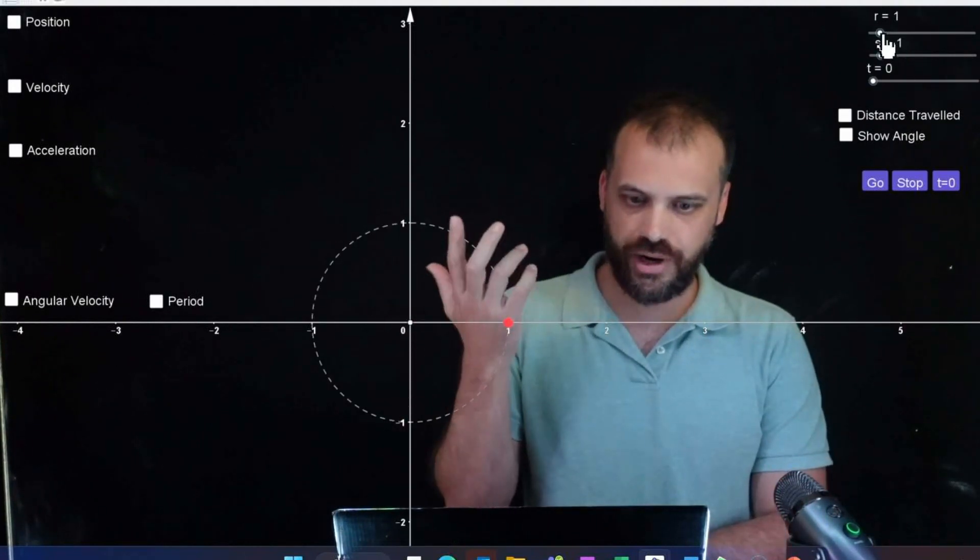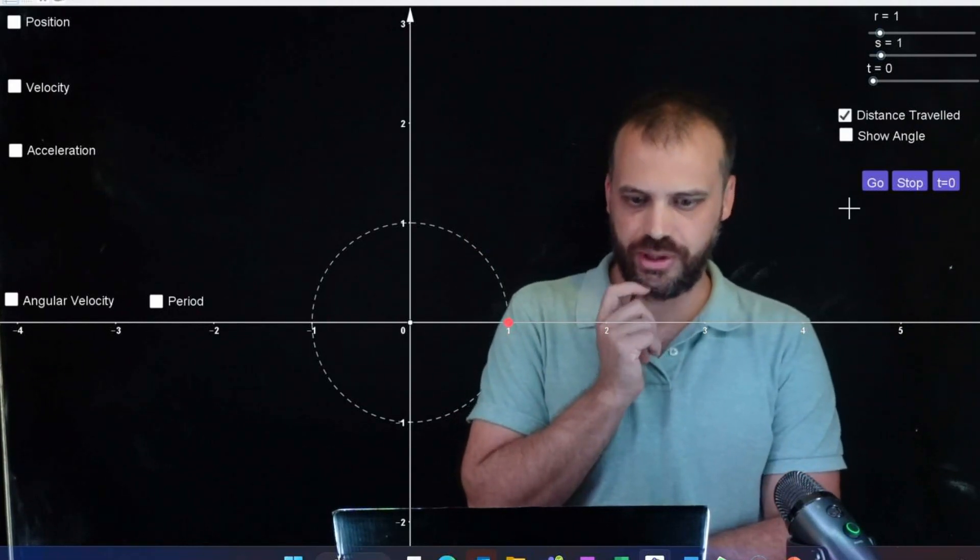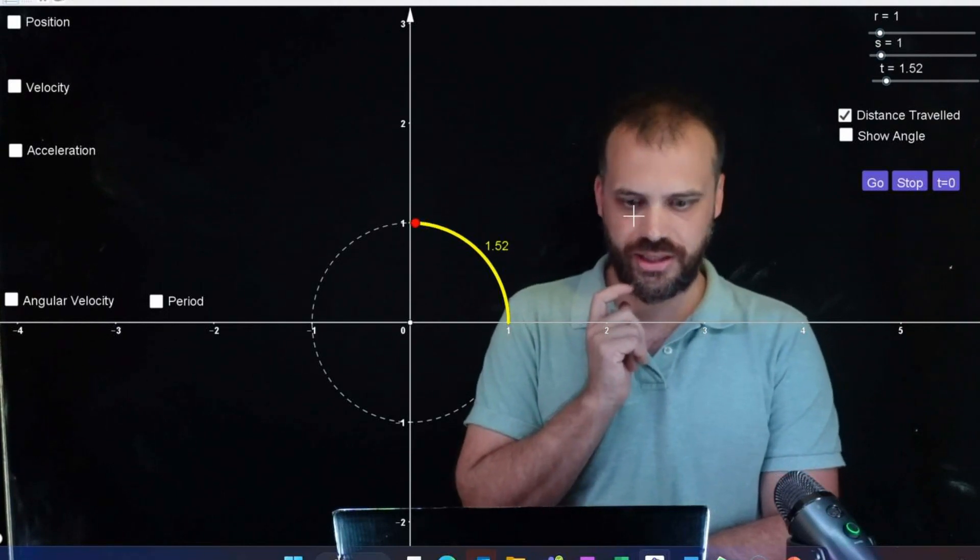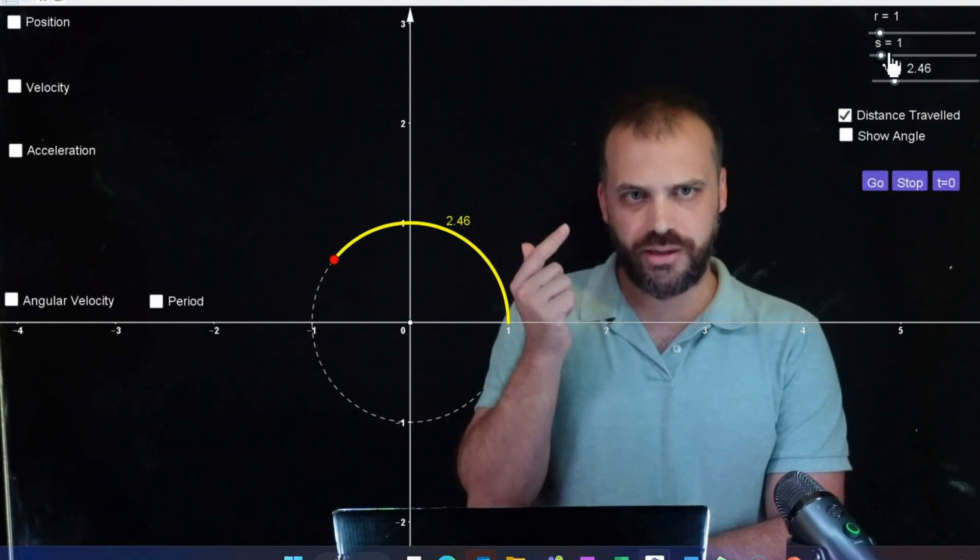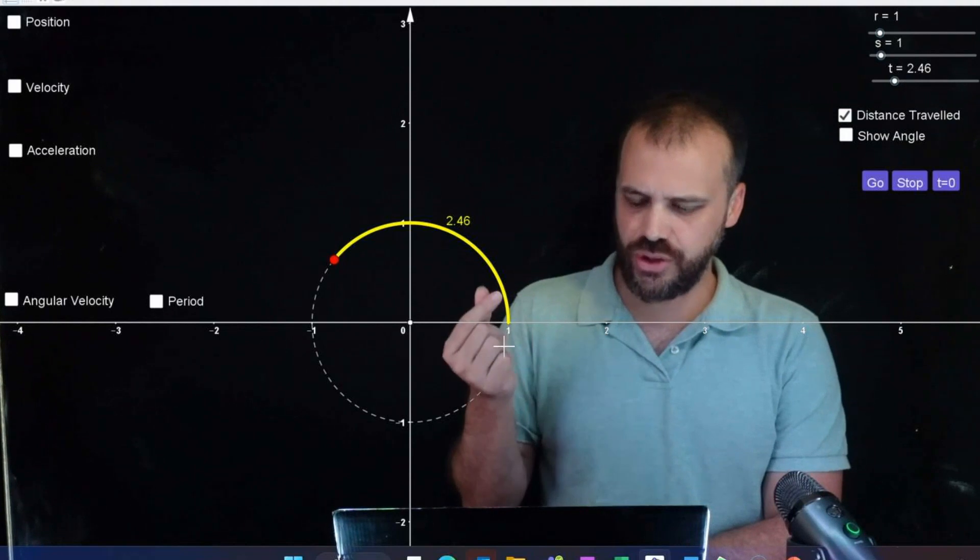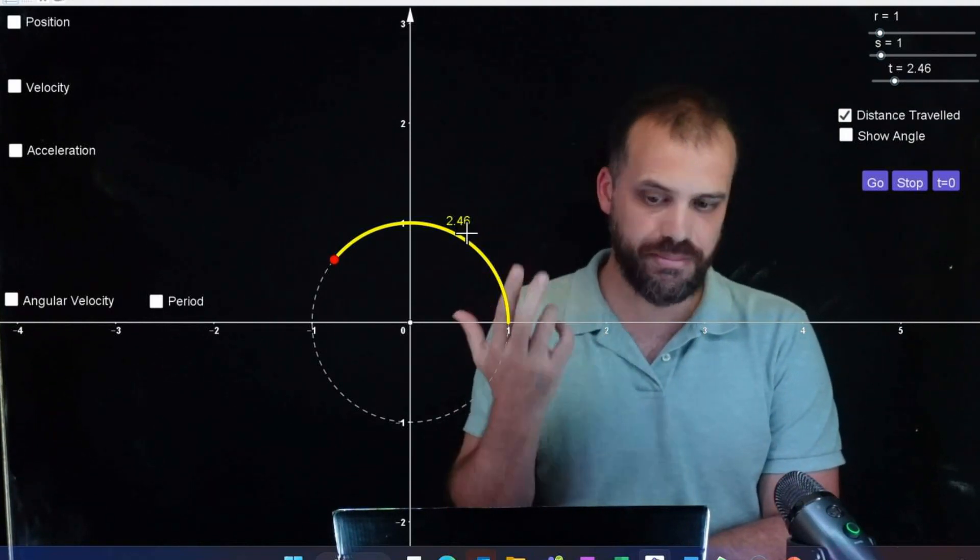I've reset the variables - radius one, speed one, time zero. Let's look at the distance traveled by this object. And go. Alright, and this is the distance around the outside of the circle. And stop. Because I'm traveling at one meter per second and I've been traveling for 2.46 seconds, it feels obvious that this object has moved 2.46 meters.